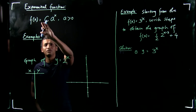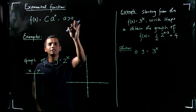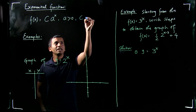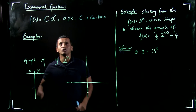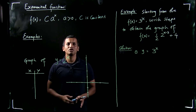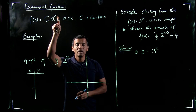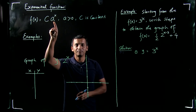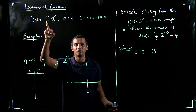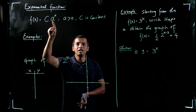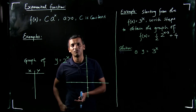Any function of the form c times a to the x, where a is positive and c is a constant, is called an exponential function. The key idea is: if x is in the exponent and there is a positive number in the base, then it is an exponential function. The constant c can be positive, negative, or any number, but the base must be positive.